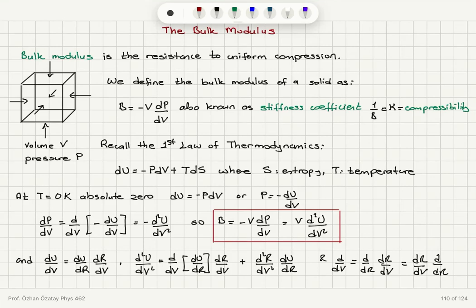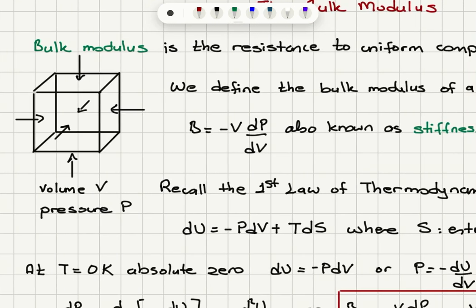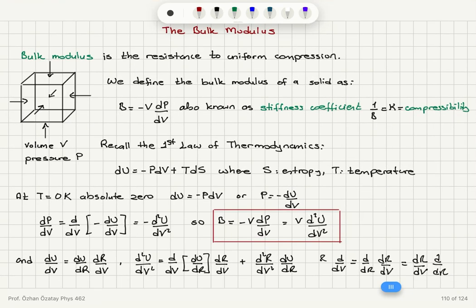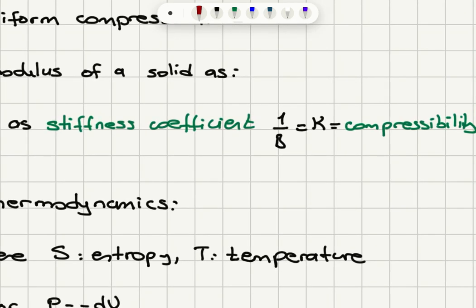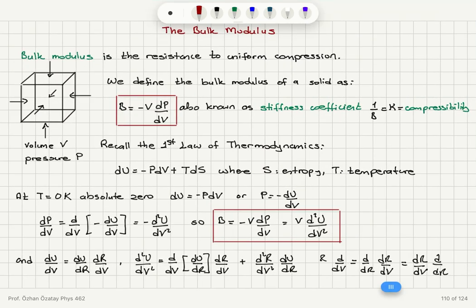One indicator of bond strength is the bulk modulus. If we have a high melting point and high bulk modulus, that means the bond is very strong. The bulk modulus is the resistance to uniform compression. If you apply pressure from all sides on a solid, we define the bulk modulus as B = -V dP/dV — the change in pressure divided by change in volume, multiplied by minus the original volume. It's also known as the stiffness coefficient, and one over bulk modulus is called compressibility.